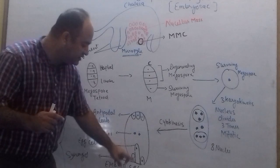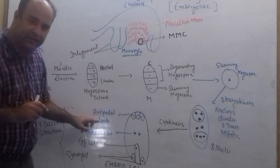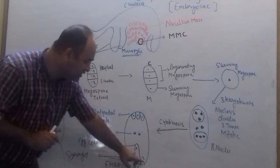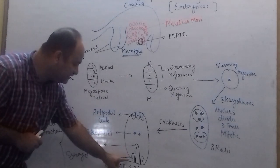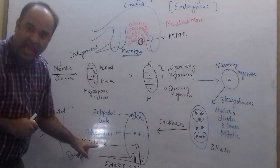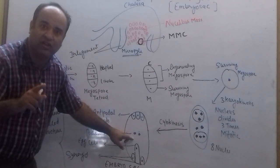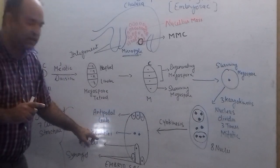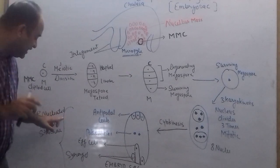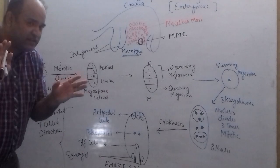This is the structure of the embryo sac. The upper three cells towards the chalazal end are known as antipodal cells. The two small cells are known as synergids. One bigger cell is known as the egg cell. And the two central nuclei are known as polar nuclei. This entire structure is the embryo sac — it is an 8-nucleated and 7-cell structure.